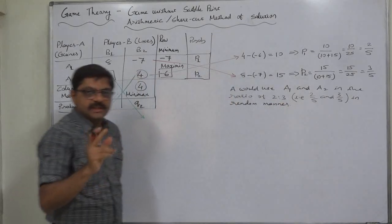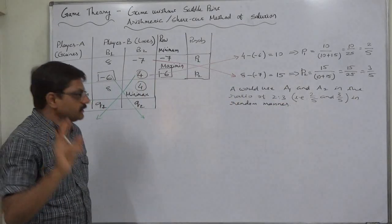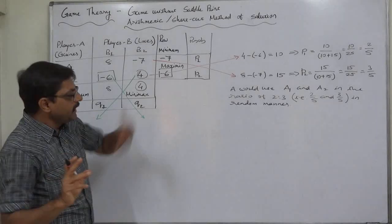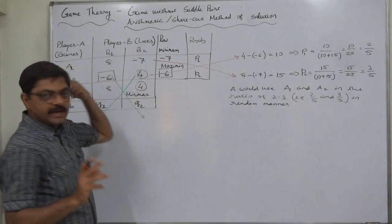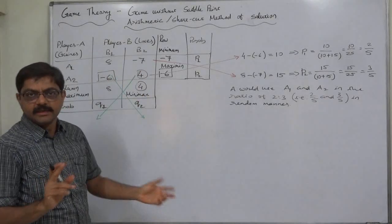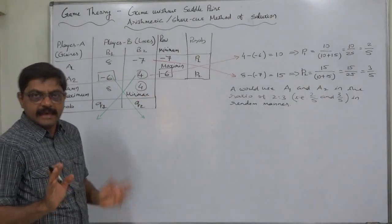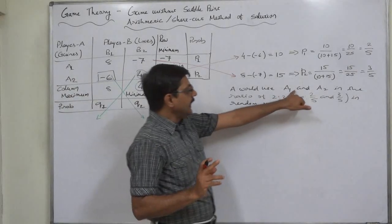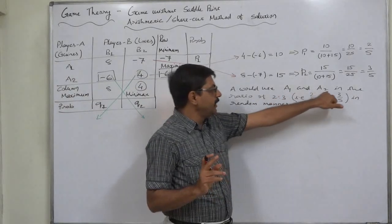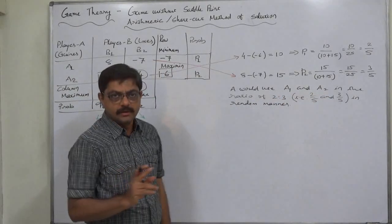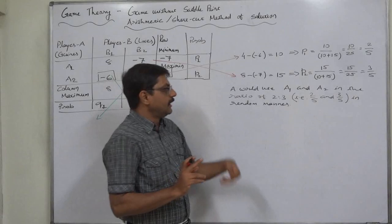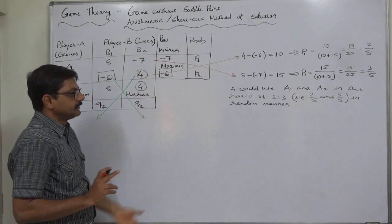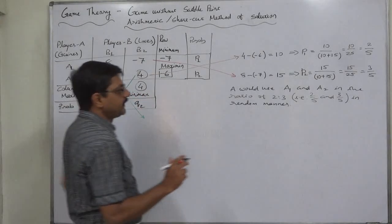This is actually a long-run proportion. So many times this game is played by A and B, and in the long run, A would use A1 and A2 in the ratio of 2 is to 3.